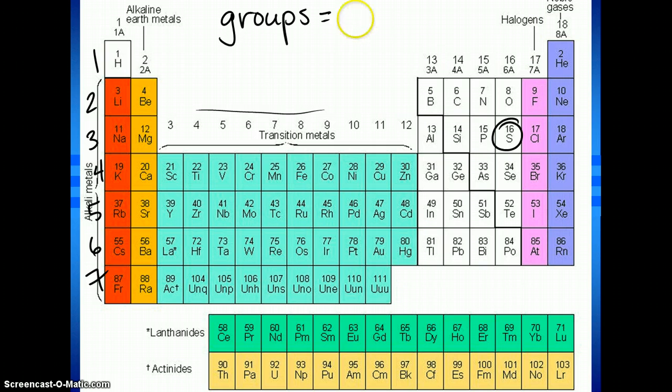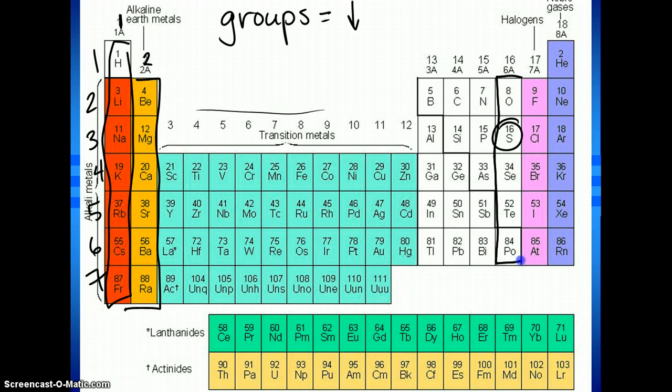So this here is considered one group. This is considered also a group. This is group number 1, and this is group number 2. So 16 contains all of these, group 16 contains all of these elements.